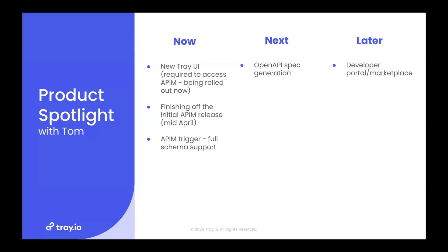Shortly after that, the ability to generate an OpenAPI spec off the back of the endpoints you build on Tray. The applications are numerous — you can use them to build developer portals either internally or publicly facing to give access to the APIs you build on Tray. Off the back of that, we're looking at a developer portal marketplace type offering — the idea of potentially hosting your documentation directly on Tray. We're certainly keen to hear thoughts on that. There are other things being considered as well; these are just the things that are definitely going to be happening.